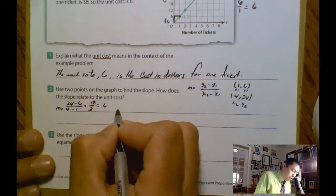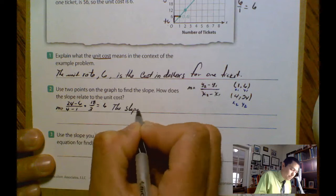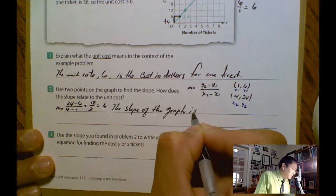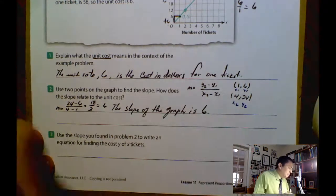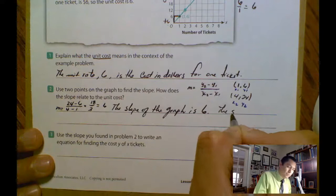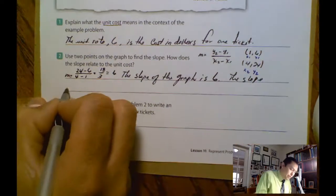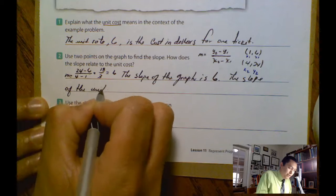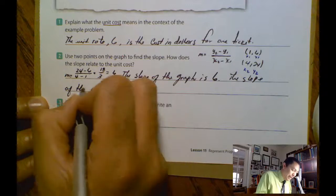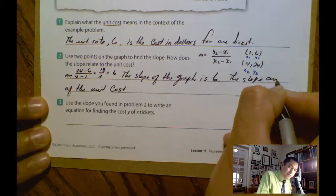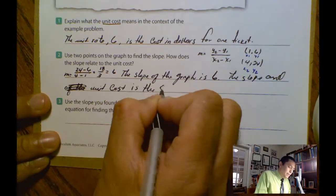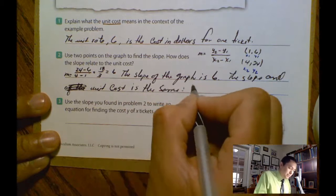So in this case, I'm going to say the slope of the graph is 6. And the slope of the unit cost is the same. The slope of the unit cost is the same. In this case, 6.